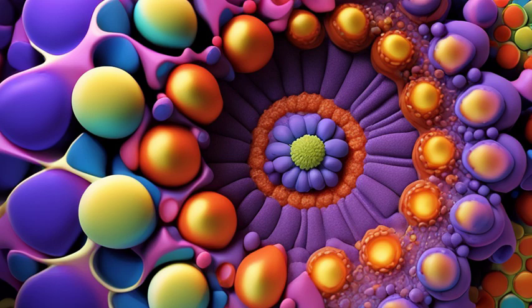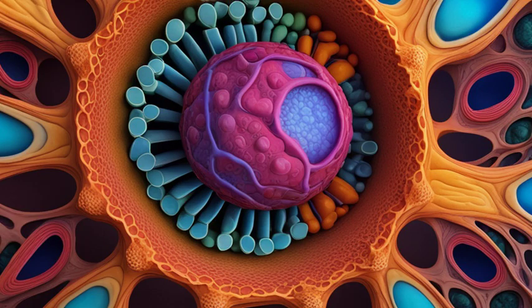Inside the cell, we have a jelly-like substance called cytoplasm. It holds all the other components in place.